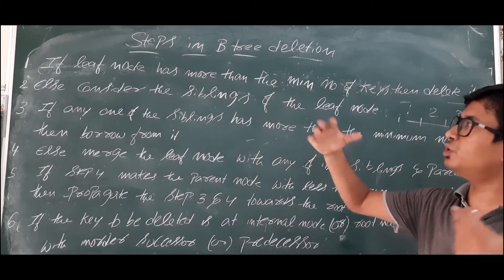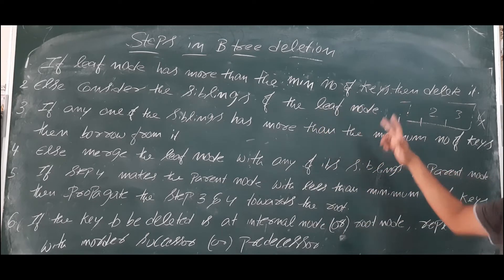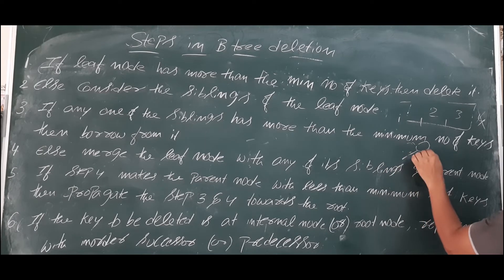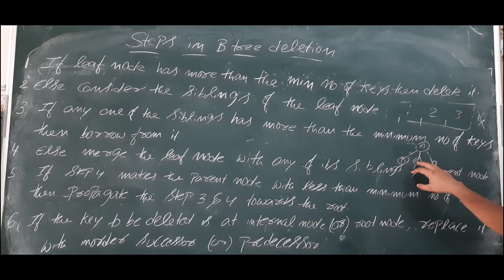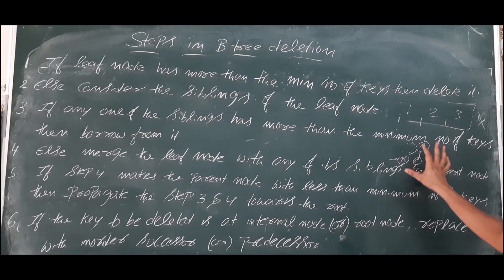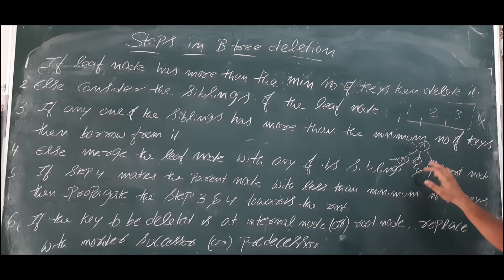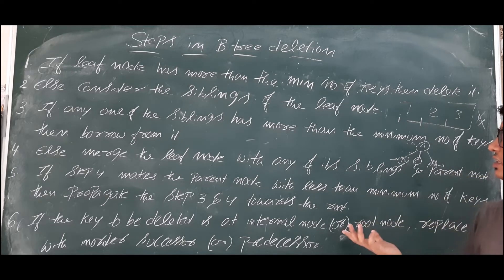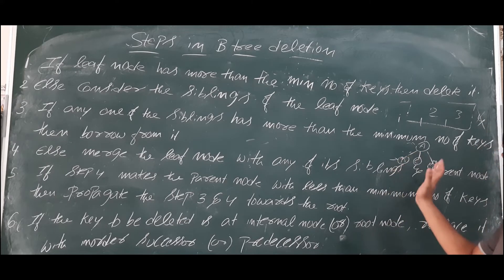If the leaf node does not have more than the minimum number of keys, we have to consider the siblings. For example, if there is a parent node with children B, C, and D, and you want to delete an element from node C, then B and D are the siblings of C. If any sibling has more than the minimum number of keys, borrow from it. We will discuss how to borrow with examples.